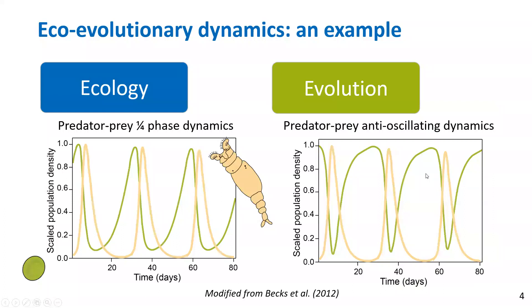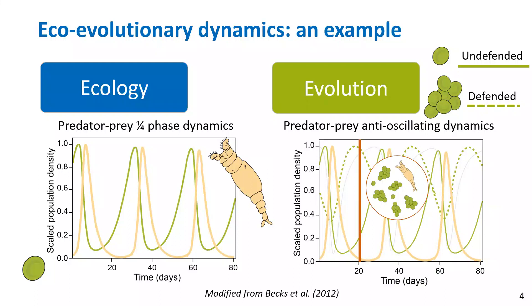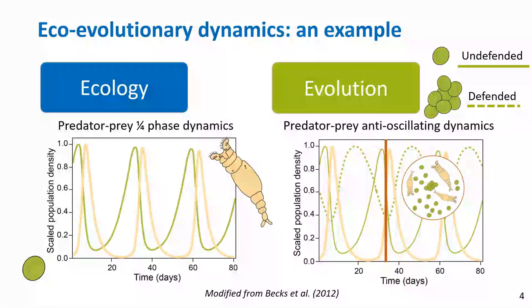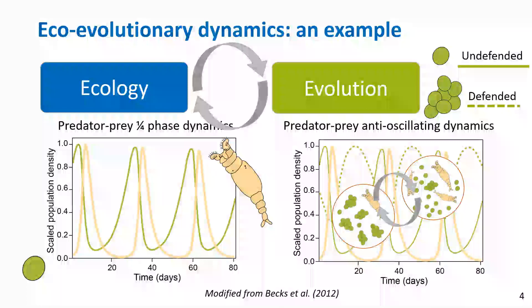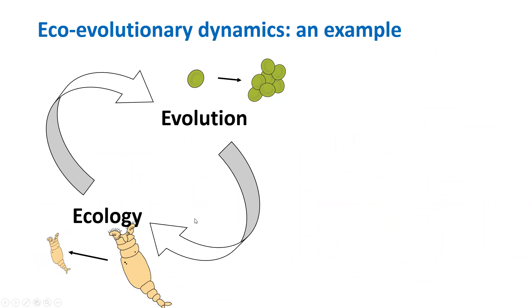It was the rapid change in genotype frequencies between defended and undefended prey genotypes that resulted in these anti-oscillating dynamics. High predator densities selected for defended prey genotypes, reducing undefended prey and hence food availability. The predator then reduced in density, which provided a benefit for undefended genotypes that rapidly increased again, causing predator densities to rise. This illustrates eco-evolutionary feedbacks where ecological density changes feed back on evolutionary changes in the prey population.